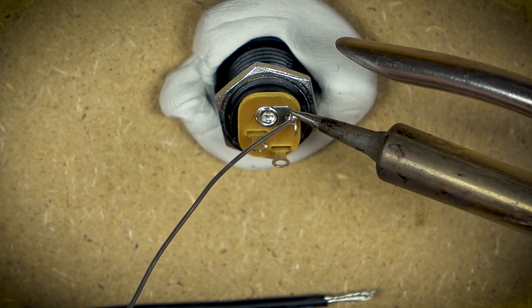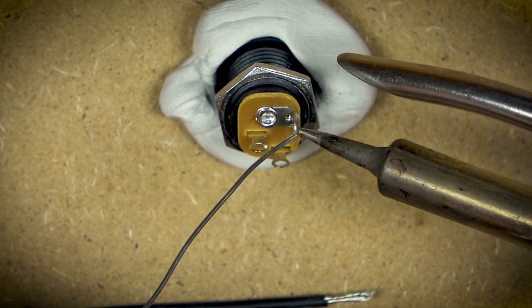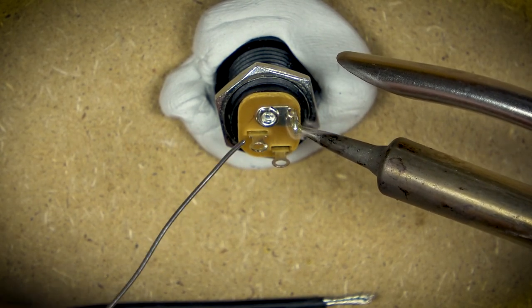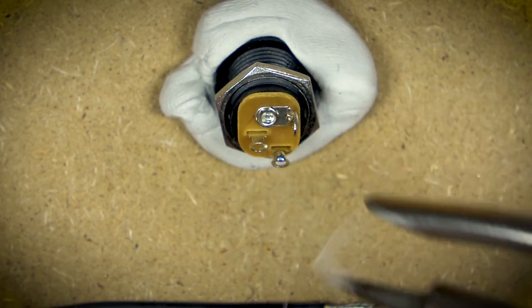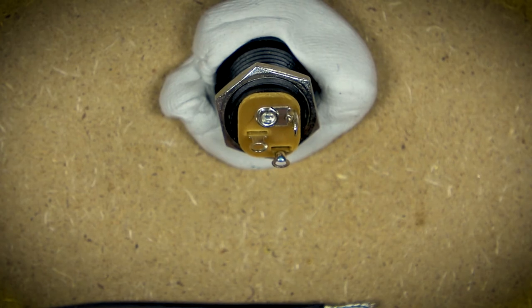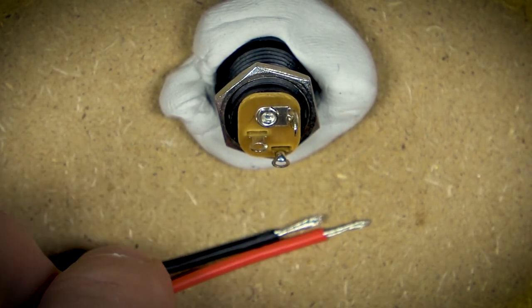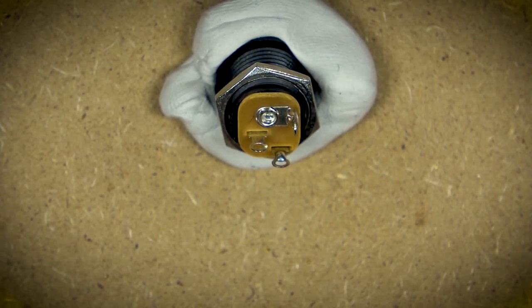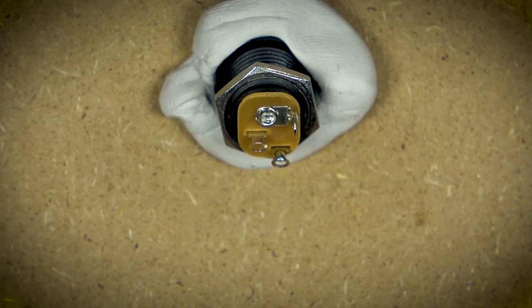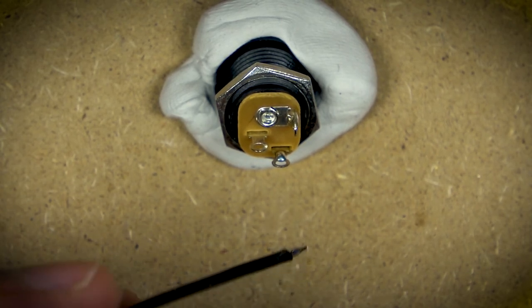With a little bit of poster tack holding the socket or jack in place, I'm going to pre-tin all of the connections - all two of them. If you find you're not getting a good adhesion, a little bit of scuffing with a Scotch-Brite or scouring pad, or a little bit of rosin flux will help the solder stick.